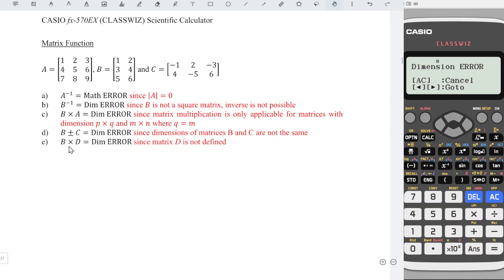Next, Part E, B times D. So we have option matrix B times option matrix D, number 6, and we press equal. As we can see, dimension error. This is because D is not defined.